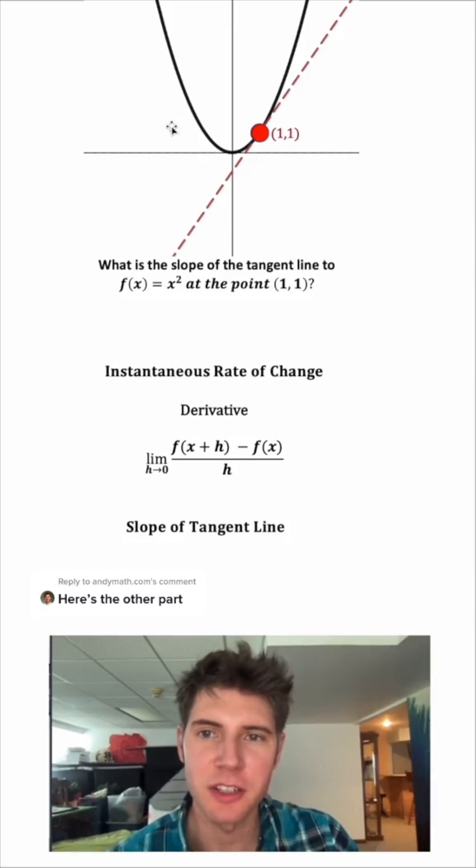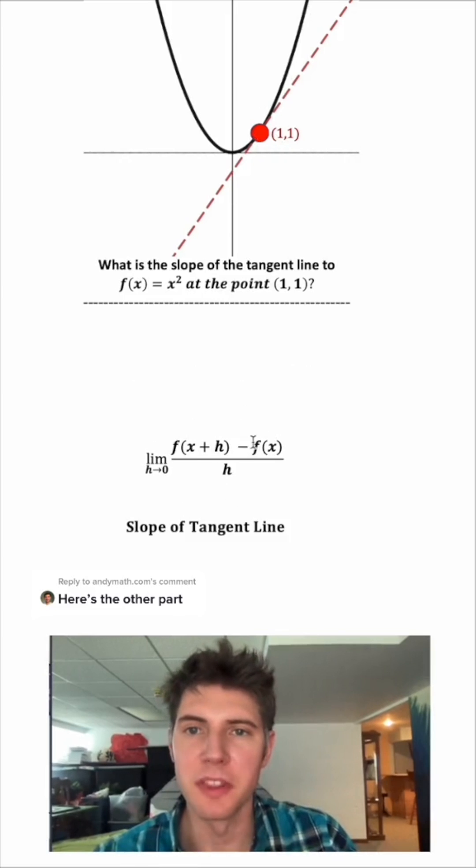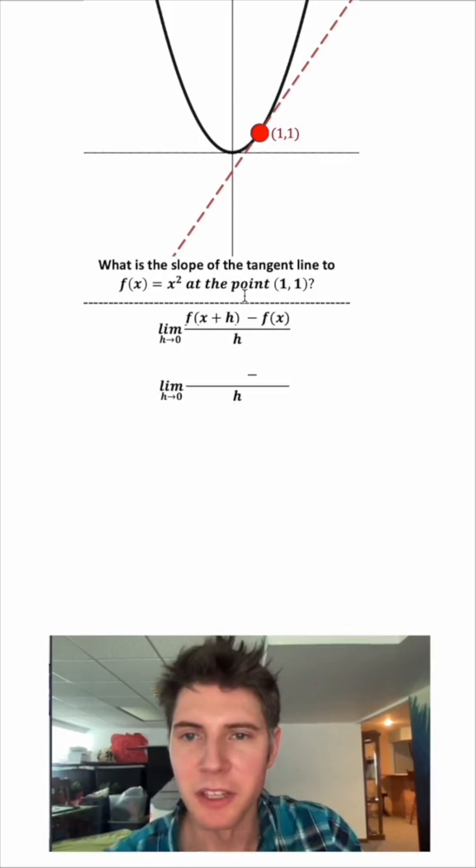What is the slope of this tangent line to the parabola f of x equals x squared at the point 1, 1? Let's get rid of this real quick. This is the slope of the tangent line. So that's how we're going to answer the question.